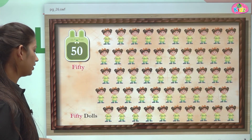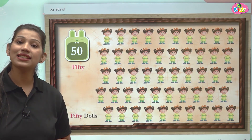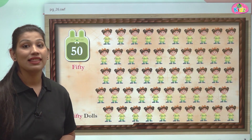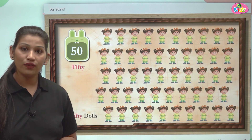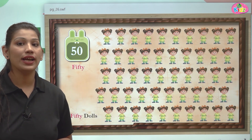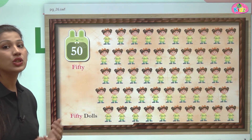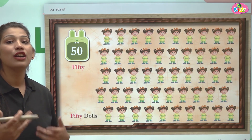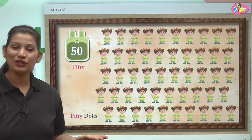5-0 is 50. F-I-F-T-Y is 50. Here you can see 50 dolls. These dolls are 50 in number. F-I-F-T-Y is the number name of 50. It is important for you all to learn the number name of 50 because it will help you in forward writing of number names from 51 to 59.